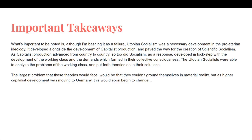It developed alongside the development of capitalist production and paved the way for the creation of scientific socialism. As capitalist production advanced from country to country, so too did socialism as a response, developing in lockstep with the development of the working class and the demands which formed in their collective consciousness. The utopian socialists were able to analyze the problems of the working class and put forth theories as to their solutions. The largest problem these theories would face was that they couldn't ground themselves in material reality, but as higher capitalistic development was moving to Germany, this would soon begin to change. Thank you very much.